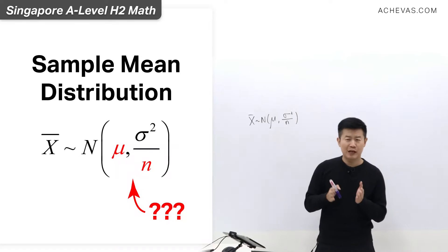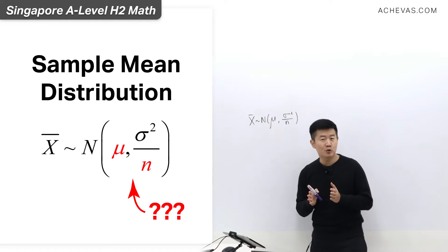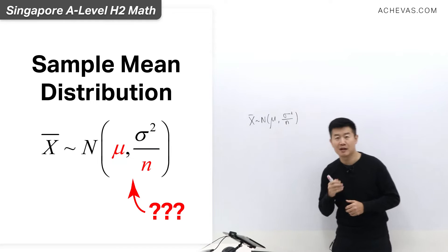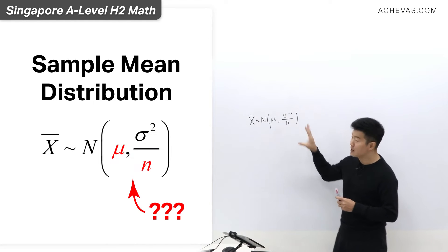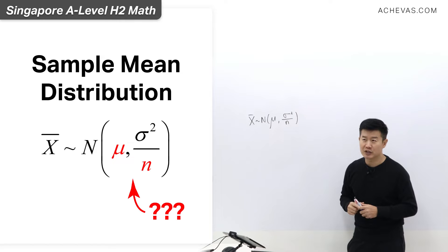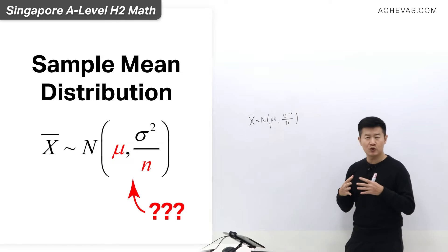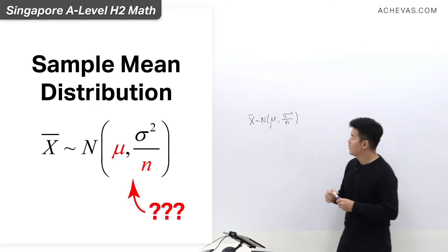When it comes to the exam period, there will be some students who will start to ask me: Hey Jack, why is it that for the sample mean distribution, the parameter looks so weird?